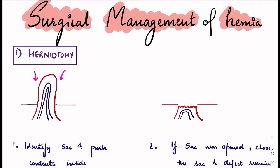Today's topic is surgical management of hernia. There are three main types: herniotomy, herniorafi, and hernioplasty. We'll be talking about each one in detail.